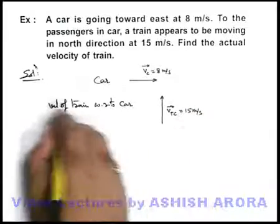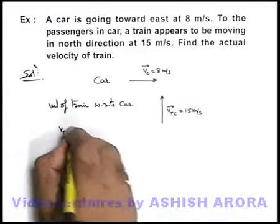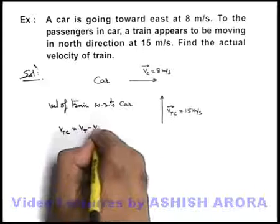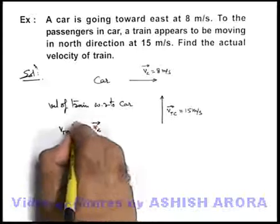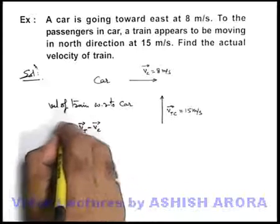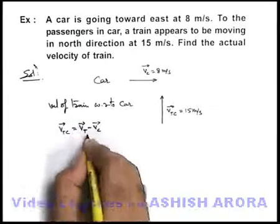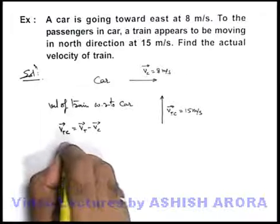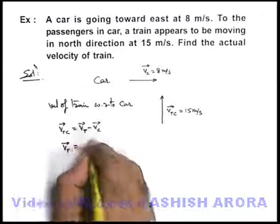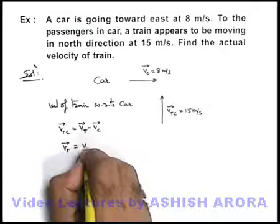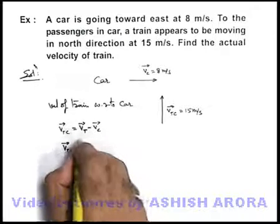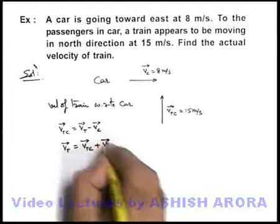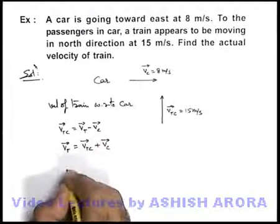We know that the velocity of train with respect to car can be given as V_T minus V_C. Therefore, the velocity of train can be written as the velocity of train with respect to car plus the velocity of car.